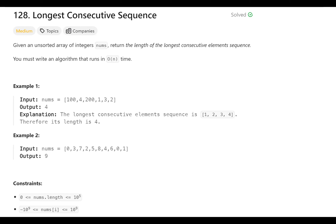Welcome everyone for another LeetCode problem. Today's problem is problem 128, Longest Consecutive Sequence, and this is one of the problems in the Blind 75 list. The problem description says we are given an unsorted array of integers, and we have to return the length of the longest consecutive element sequence. Our algorithm has to be in order of N time, so it has to be an efficient algorithm.